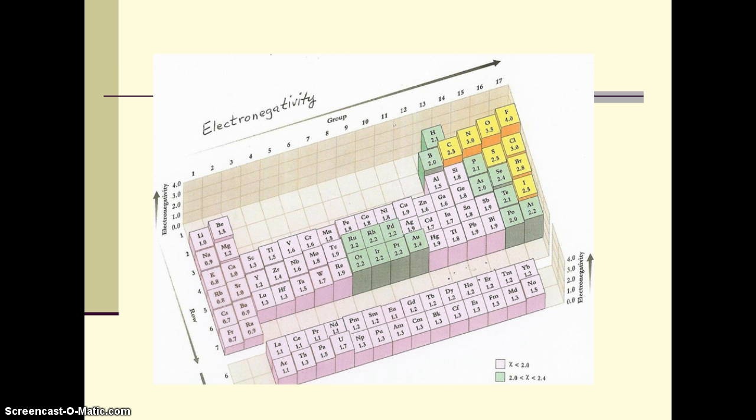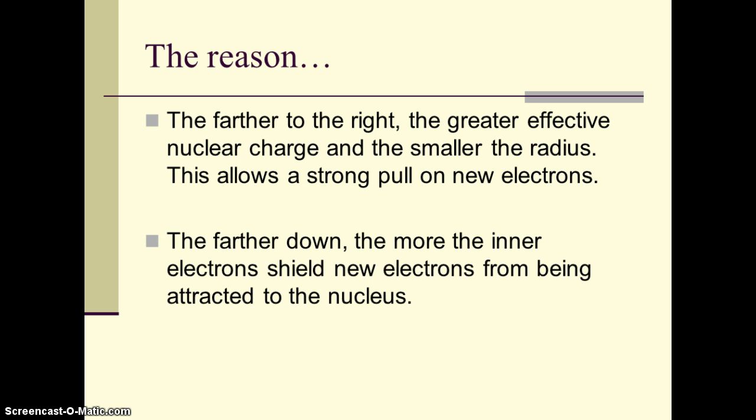We can see another three-dimensional pattern if we look at the 3D view. Fluorine, you can see, is very good at drawing in new electrons. And francium and radium and cesium are not very good at it. And this all goes back to that greater effective nuclear charge. Farther to the right you go, the more the nucleus has to pull with, more protons, and the smaller the radius, which means that the nucleus can extend an attractive force outward to new electrons.